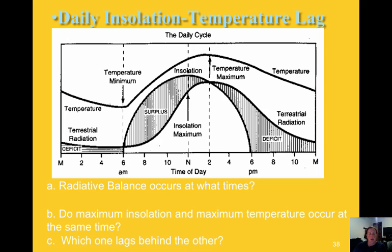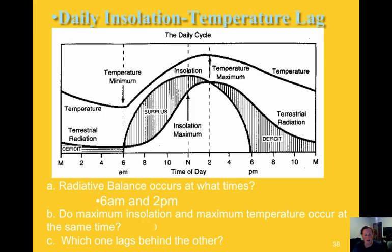Over the course of the day, the most intense insolation occurs at noon, but that is not the hottest time of day. There's a lag in the time it takes for Earth to heat up over the course of the day. While maximum intensity of insolation occurs at noon, it takes until about 2–3 o'clock in the afternoon to reach the highest temperatures. The coolest temperature occurs right before sunrise — after the sun goes down around 6 or 7 p.m. and before it rises around 6 a.m. Maximum insolation and maximum temperature do not occur at the same time; temperature lags behind.